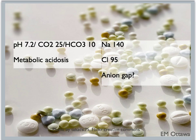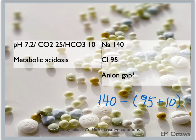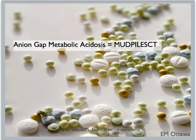This is an important list that you'll find you go back to during your medical career when a patient presents with an anion gap metabolic acidosis. Let's go back to our patient. His blood work shows a sodium of 140 and a chloride of 95. What is the anion gap? Using the formula, the anion gap is 140 minus (95 plus 10), which equals 35. There is definitely an elevated anion gap. Therefore, our patient has an anion gap metabolic acidosis, and we know he must have taken one of the toxins on the MUDPILES CATS list. The question is which one?